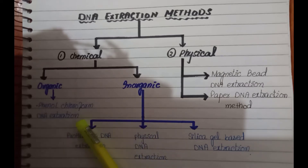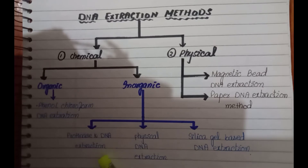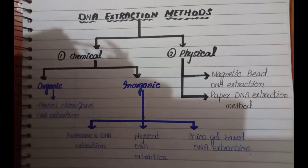Organic methods include phenol-chloroform and isoamyl alcohol extraction. Inorganic methods include proteinase K DNA extraction, physical DNA extraction, or silica gel-based DNA extraction. In this video we will discuss silica gel-based membrane DNA extraction. These methods may vary from sample to sample or from lab to lab.